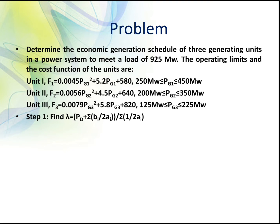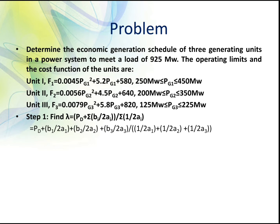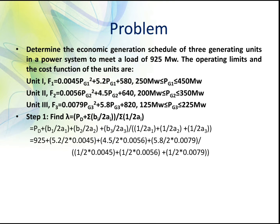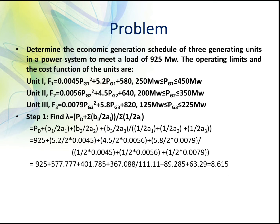Step 1: Determine the value for lambda using the equation: lambda = (Pd + b1/(2*a1) + b2/(2*a2) + b3/(2*a3)) / (1/(2*a1) + 1/(2*a2) + 1/(2*a3)), where Pd = 925. The coefficients a1, b1, a2, b2, a3, b3 are obtained from the respective cost functions. Substituting the values gives lambda = 8.615.